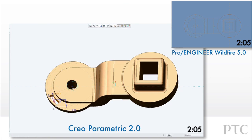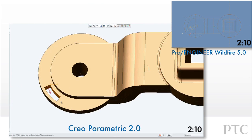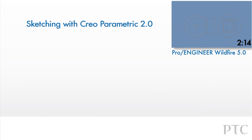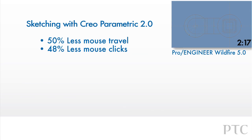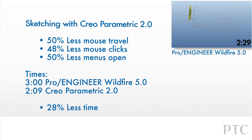We've shown some of the key highlights in sketching with Creo Parametric, including new capabilities and streamlined workflows. The result is improved design productivity — as even in this short comparison, I saved 28% of the time taken to achieve the same result with Creo Parametric compared to Pro Engineer Wildfire.